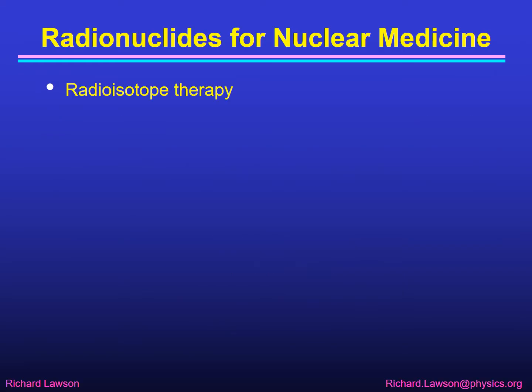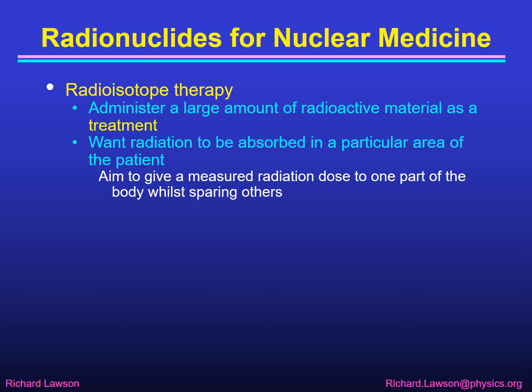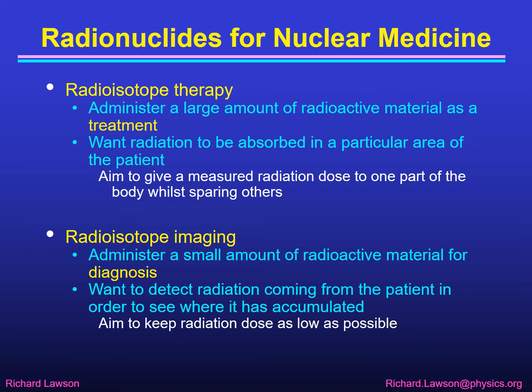We need to distinguish between two applications. In radioisotope therapy we're administering a large amount of radioactive material as a treatment. What we want to do is to have radiation that's absorbed in a particular area of the patient to give a radiation dose to that part of the patient whilst sparing the rest of the body. In radioisotope imaging we want to administer a much smaller amount of radioactive material for the purposes of diagnosis. What we want to do there is to detect the radiation that's coming from the patient in order to see where it has accumulated, and the aim there is to keep the radiation dose as low as possible.